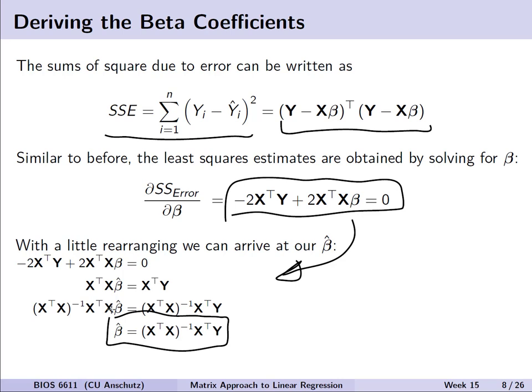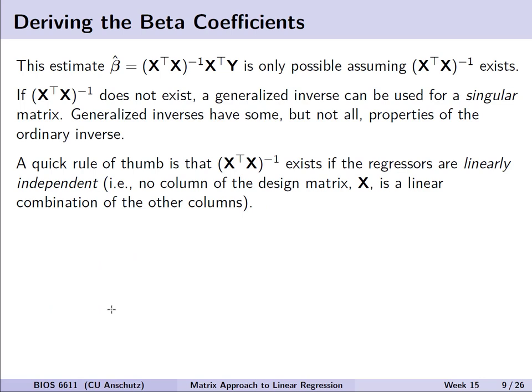We can use this estimate for inference once we have the design matrix and outcomes of interest. One caveat: this estimate of beta-hat is only possible if X-transpose X inverse exists. If it does not, we need a generalized inverse for a singular matrix. In linear regression, our rule of thumb is that X-transpose X inverse will exist if the regressors are linearly independent — meaning you can't solve one column of X as a combination of other columns. If so, we have a singular matrix and should remove the redundant information.